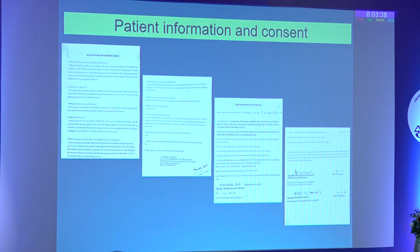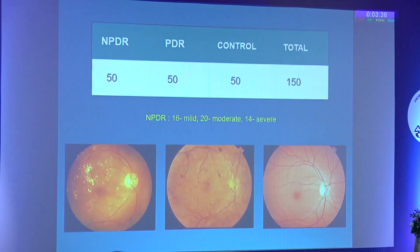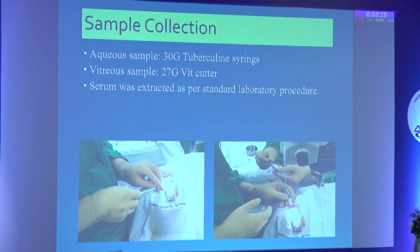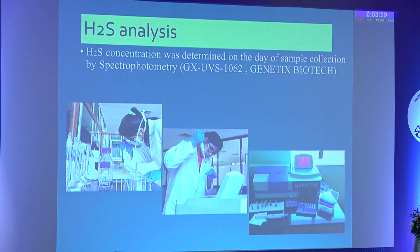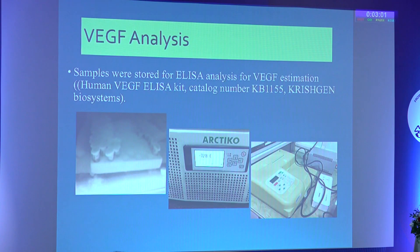Standard consent forms were obtained from all patients. We collected 150 patients in total: 50 NPDR, 50 PDR, and 50 control group. Of the NPDR group, 16 were mild, 20 were moderate, and 14 were severe NPDR. Aqueous humor was collected using a 30-gauge tuberculin syringe by AC tap, and vitreous samples were collected by single-port 27-gauge cutout during intravitreal injections. Serum was extracted per standard laboratory procedure from whole blood. H2S analysis was performed on the day of collection within four hours by spectrophotometry, and VEGF analysis was done by ELISA.